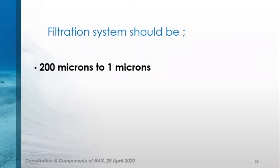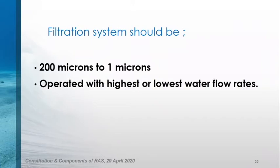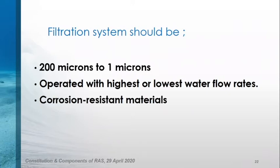The ideal filtration system should handle from 200 microns down to 1 micron. If you use RAS in incubation, you should use down to 5 to 1 microns because particles of that size can block the pores of fish eggs. However, if you use RAS in grow-out management, you can use bigger microns. Filters should operate at the highest and lowest water flow rates, because filtration should still be working at very low water flow. Any reduction in water supply should not stop the filtration system. Corrosion resistant materials should also be used throughout.